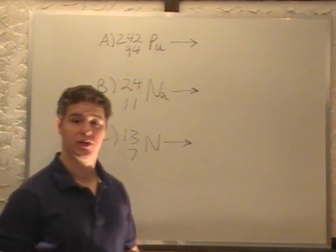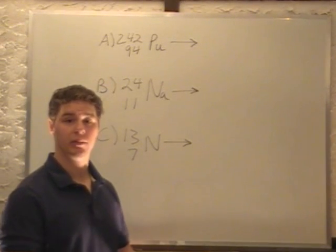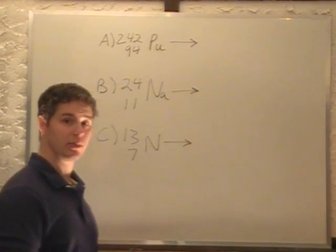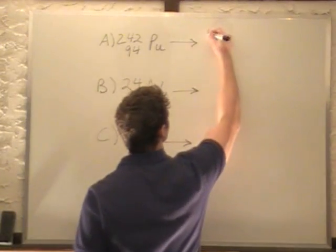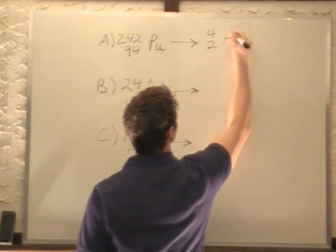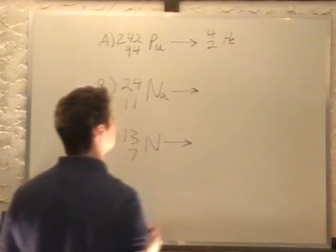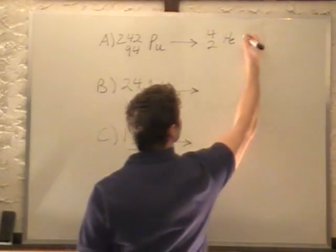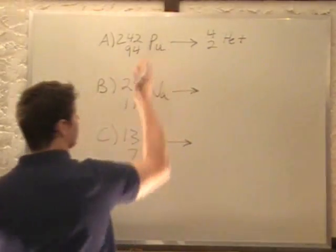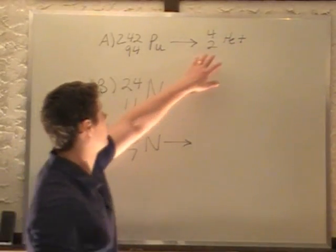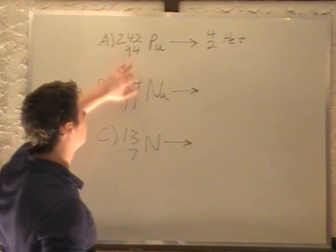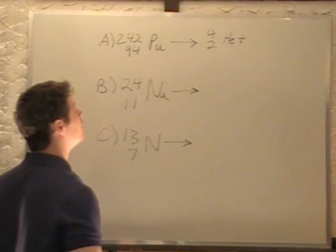So alpha decay is just releasing a helium nucleus. A helium nucleus is 4/2 helium, plus whatever we have left from here. Basically, we just subtract off our totals from this, so we're going to have 238/92.